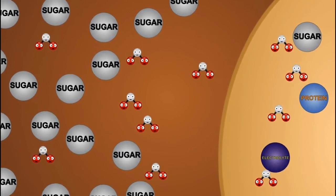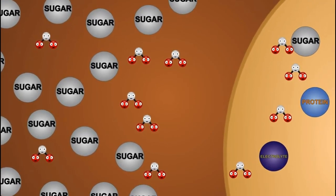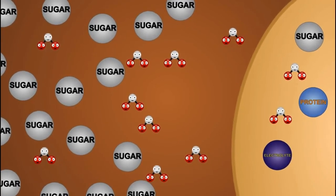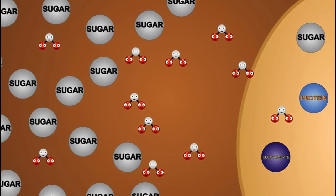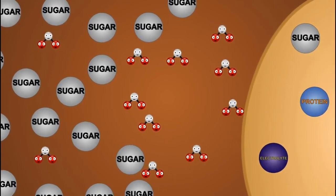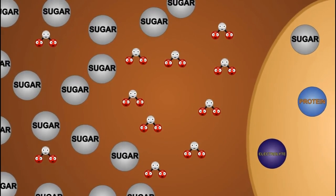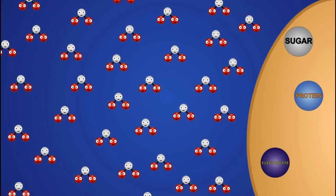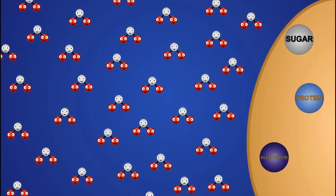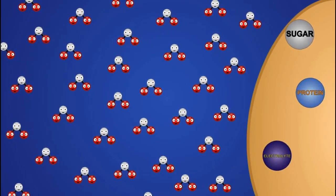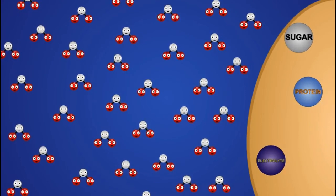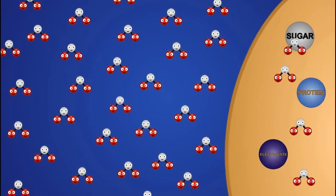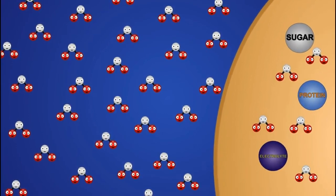This movement of water occurs because of an imbalance in molecules. Corn syrup has very few water molecules but lots of sugar molecules, while the egg has lots of water molecules and only a few sugars, proteins, and electrolytes. All molecules want to be in equal proportions on either side of the membrane, but only water can move through it. So water moves from where there are few other molecules to where there are lots — leaving the egg and going into the syrup, causing it to shrivel.